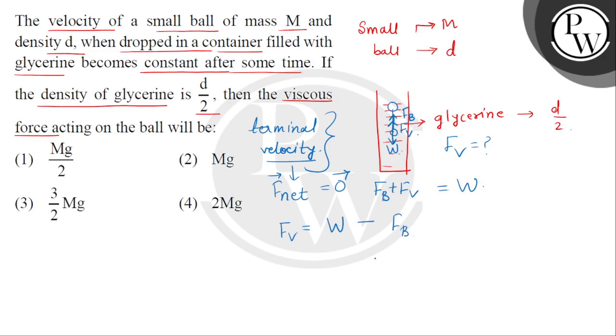अब weight of the ball क्या होगा हमारे पास, क्योंकि इसका mass है M, तो weight is equals to mass multiplied by acceleration due to gravity. And buoyant force कितना लगेगा, buoyant force will be equal to the weight of the glycerin which is displaced by the small ball.